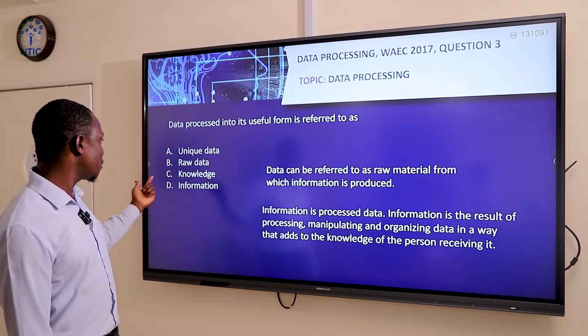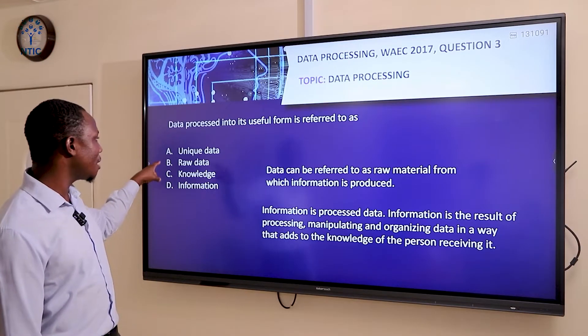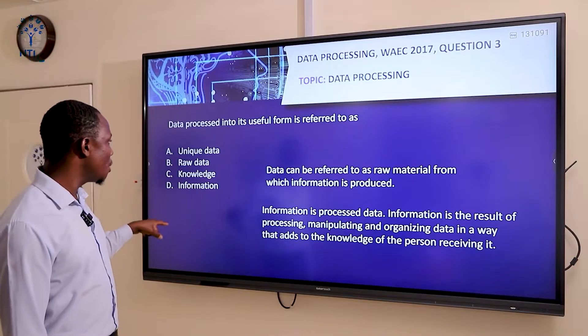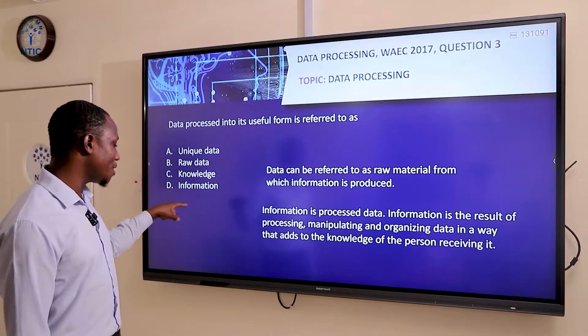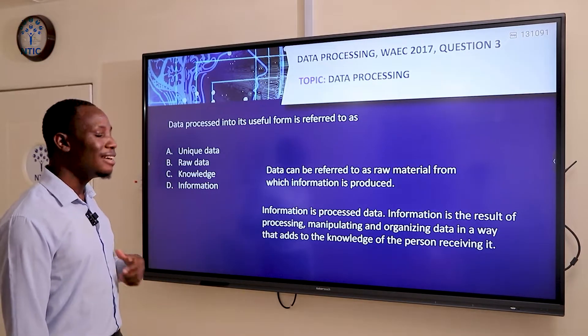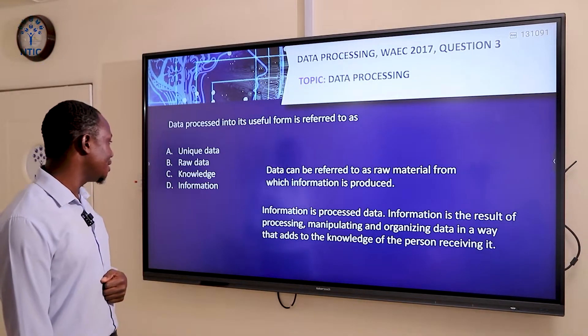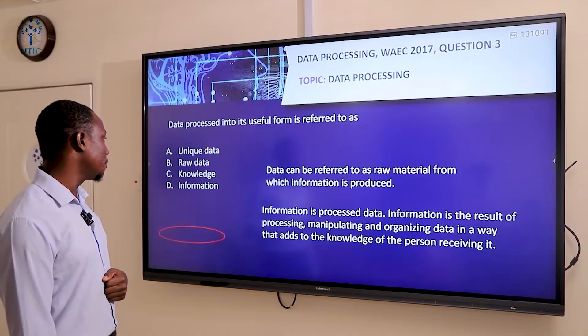Looking at the options, we have unique data, raw data, knowledge, and information. Obviously, our answer is going to be D, which is information.